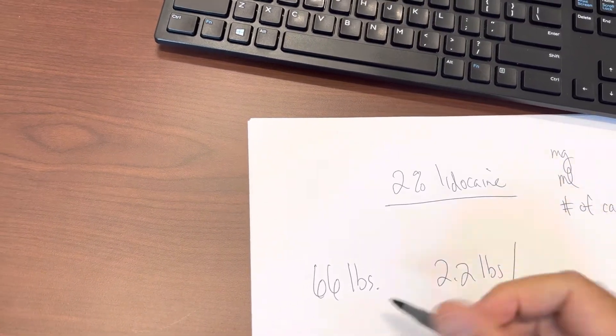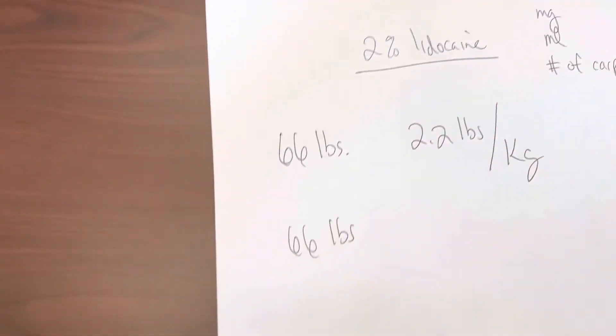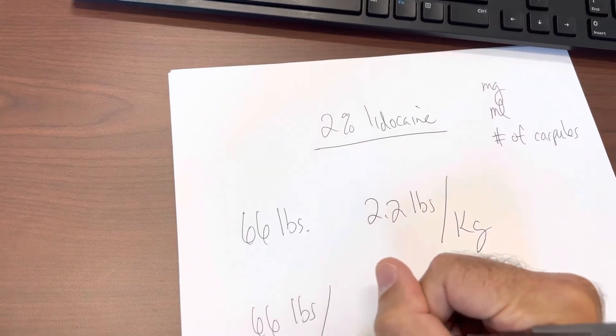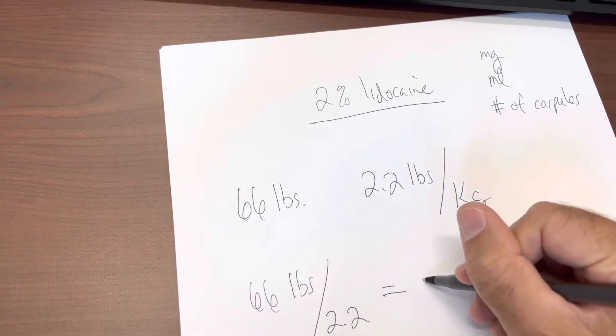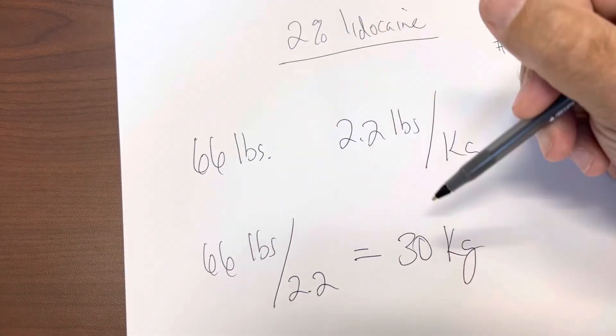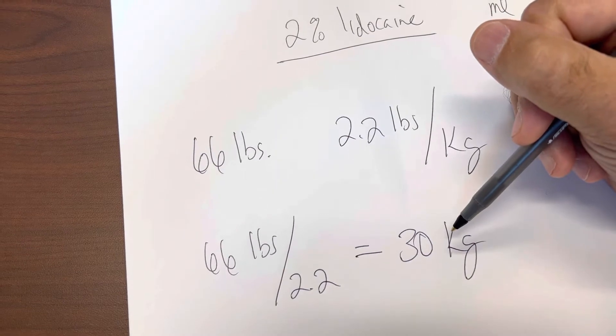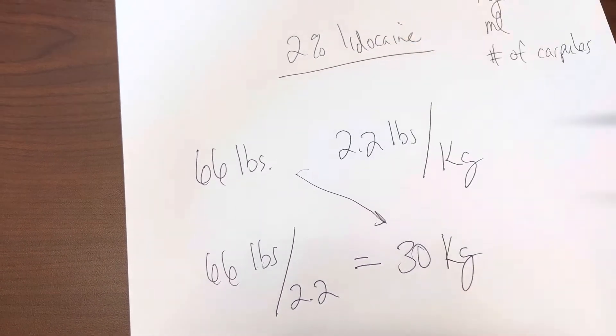And so 66 pounds, the way we get this calculation done is 66 pounds divided by 2.2 equals 30 kilograms. So a 66 pound child is actually a 30 kilogram child. So let's just work off of 30 kilograms.